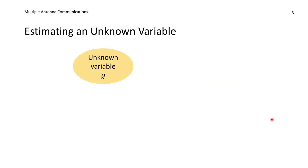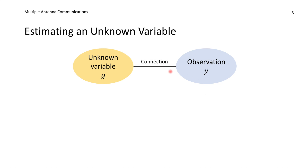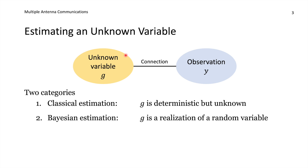The essence of estimation theory is that there exists an unknown variable that has some value g, and we would like to learn what that value is. We cannot observe this variable directly, but there is some observation y that we can obtain and it is somehow connected to the unknown variable. There are two categories of estimation theory. In classical estimation theory, g is deterministic but unknown — it has a constant value forever. While in Bayesian estimation, g is a realization of a random variable, so it is both unknown and it can change over time.